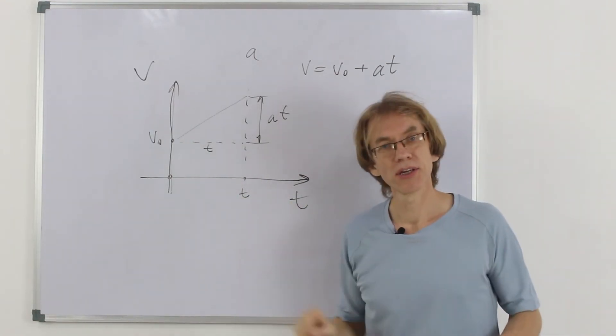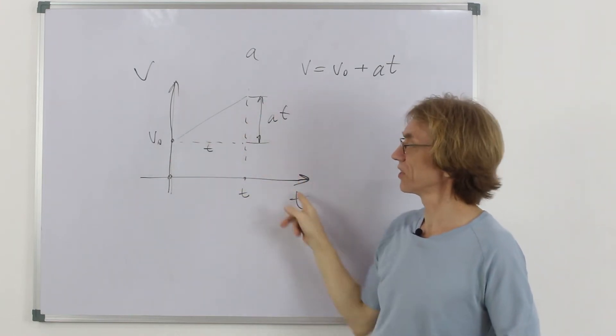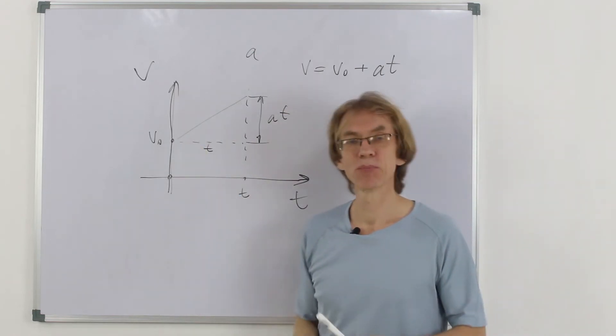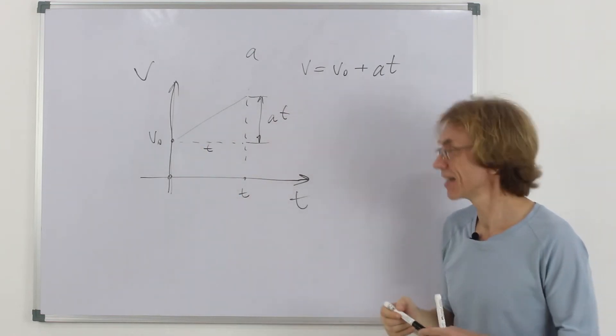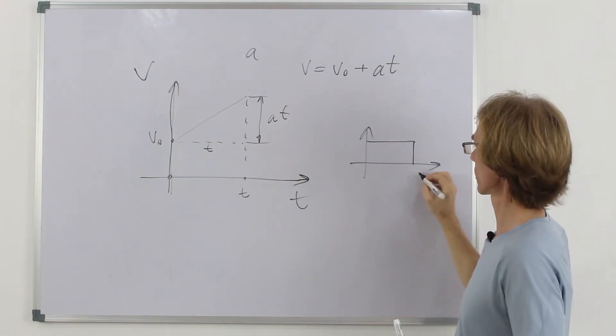Another idea is what we need is the idea about the area below the vt graph. Area below vt graph is actually displacement. Let's show why it makes sense.